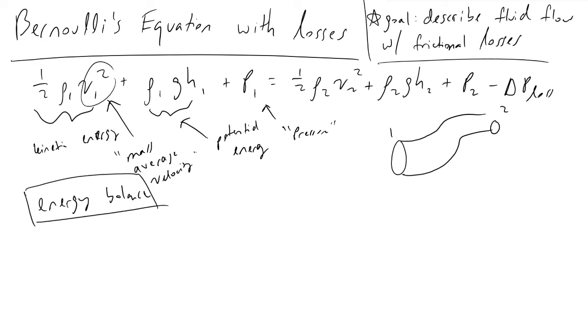What you're essentially doing is you're summing up the potential, the kinetic, and the pressure energy, and you're saying that that must be conserved. Therefore, to account for the heat losses due to the friction in the pipe, we can include this delta p loss term.